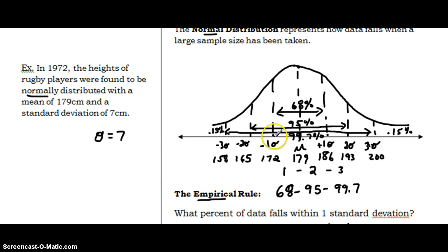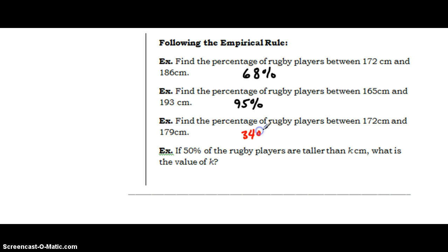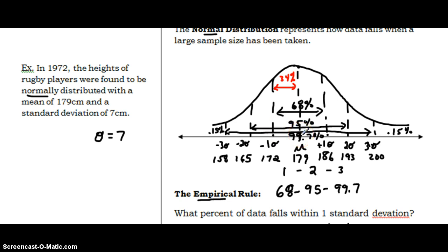The next question asks about between 172 and 179 — that's half of the one standard deviation range, so half of 68% would be 34% of the data. The last question asks: if 50% of the rugby players are taller than K centimeters, what is K? Looking at the bell curve, 50% of the data is taller than the mean, so K must be the mean, which is 179 centimeters.